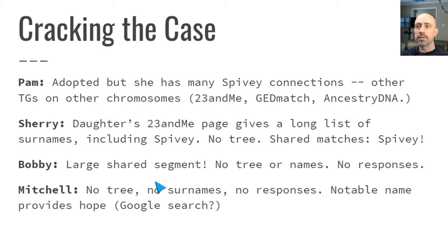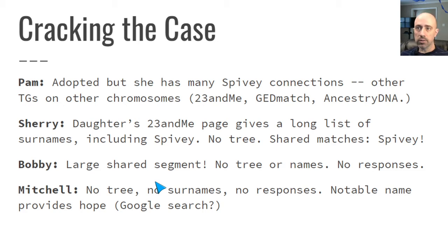Sherry is on 23andMe and has a long list of surnames on her profile page. One of those surnames is Spivey, so that was a nice clue, but there's no tree there — I had to figure it out myself. Bobby has no tree, no list of surnames, no responses to my messages — still no responses years and years later. But his segment on chromosome one is so large, over 60 centimorgans, it still turned out to be useful. Because of the promise that segment held, I went the extra mile to find Bobby using his name and having access to his picture on 23andMe.